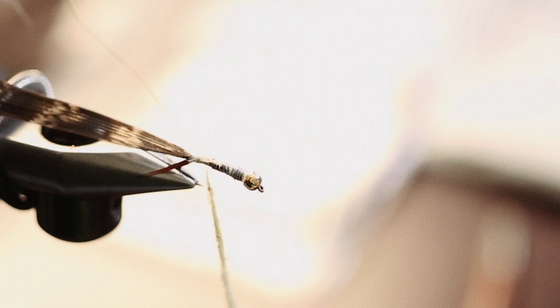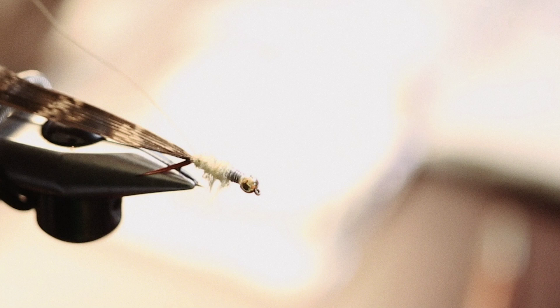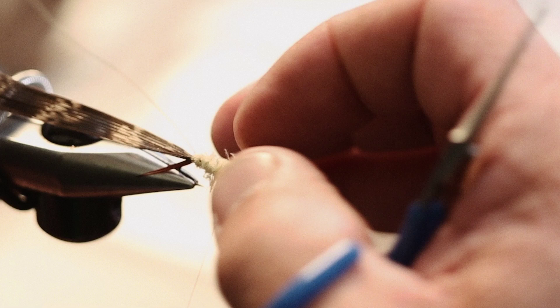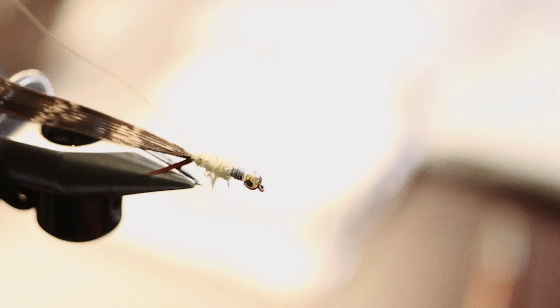We're going to use some pale yellow Trout Hunter CDC dubbing. Like all of our videos, you can scroll down below and find all the materials that we're using tying this fly listed below, which makes it easy to get the correct materials. I wrapped my CDC dubbing and I'm probably a little over a bead width away from the bead. That's going to give me enough room to make my thorax and put legs in.